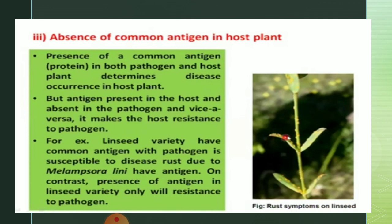For example, a linseed variety that has a common antigen with the pathogen Melampsora lini is susceptible to rust disease. In contrast, the presence of an antigen in the linseed variety only — not shared with the pathogen — confers resistance.